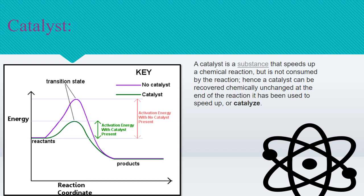A catalyst is a substance that speeds up a chemical reaction but is not consumed by the reaction. Hence a catalyst can be recovered chemically unchanged at the end of the reaction it has been used to speed up or catalyze. Here you can see the energy diagram showing how the reaction takes place using a catalyst and in the absence of one.